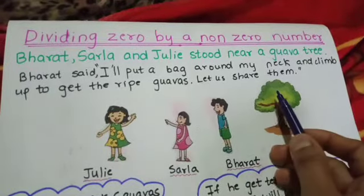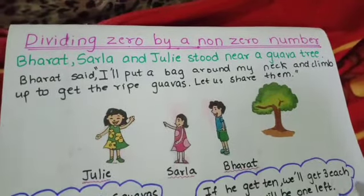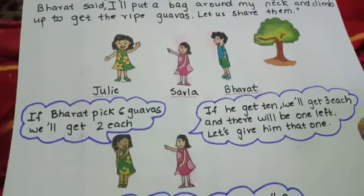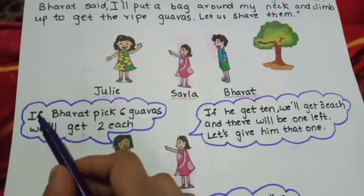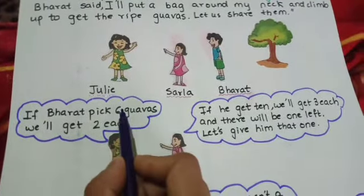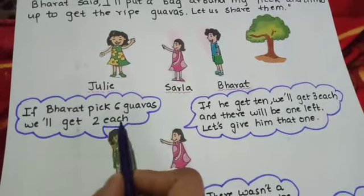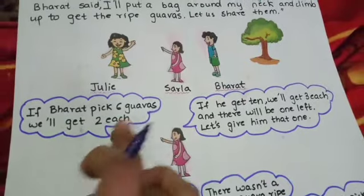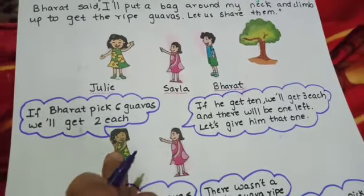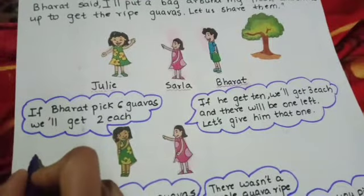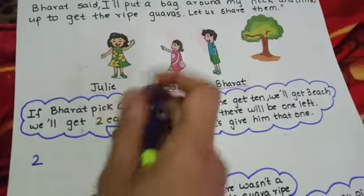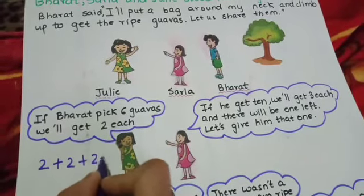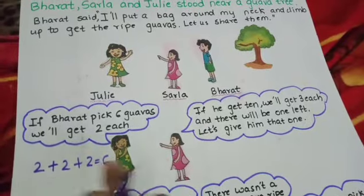Bharat climbed up the tree and Julie and Sarla waited below. Julie says, 'If Bharat picks six guavas, we will get two each.' That means if he brings six guavas and distributes them among the three children, each gets two — two plus two plus two is six. So they will get two each.